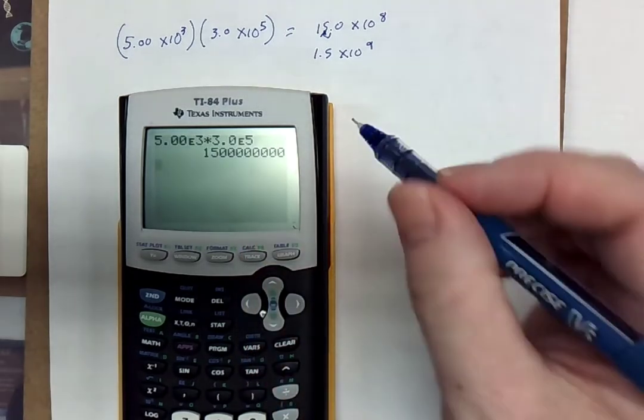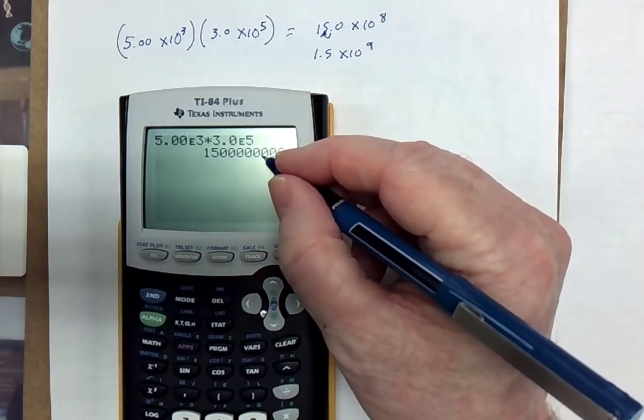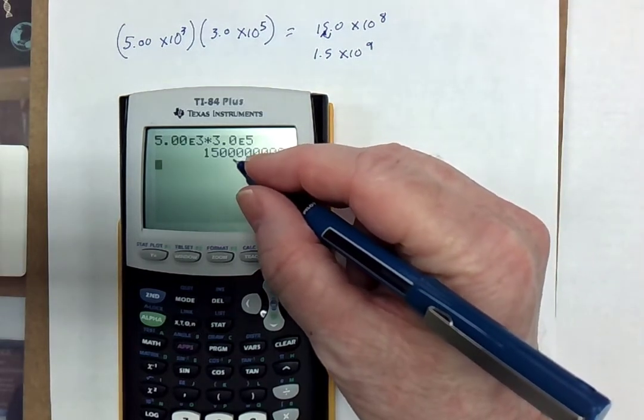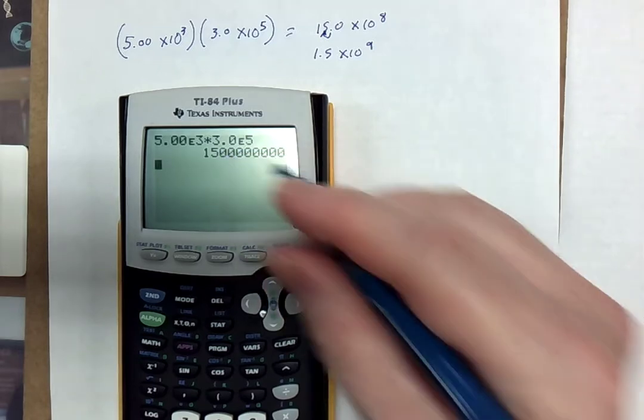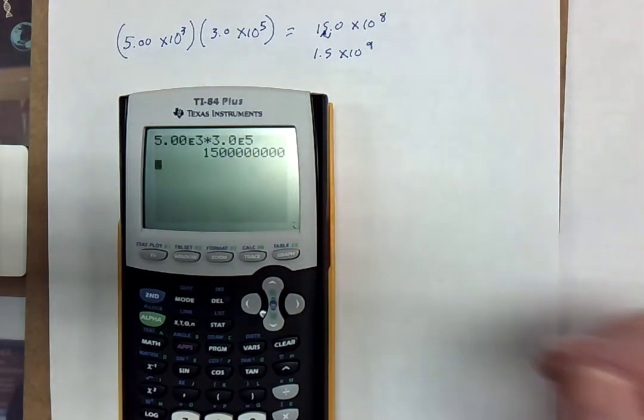It's just not in scientific notation. We can count over 1, 2, 3, 4, 5, 6, 7, 8, 9 spaces, and that's 1.5 times 10 to the ninth.